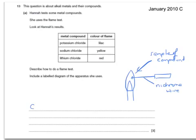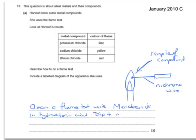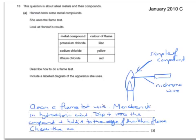She would clean a flame test wire, moisten it in hydrochloric acid, dip it into the compound, and hold it to the edge of the blue flame. Then check the color of flame made.